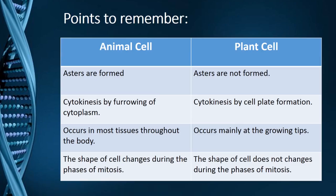Let's see some important points to remember. In an animal cell, asters are formed — asters are the structures that ultimately give rise to spindle fibers. In a plant cell, as the centrosome is absent, there are not going to be any asters. Second, cytokinesis takes place by furrowing of cytoplasm in an animal cell, whereas in a plant cell cytokinesis takes place by cell plate formation.